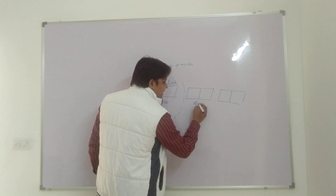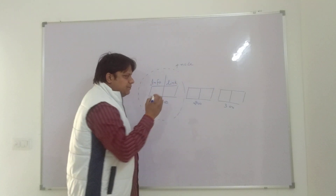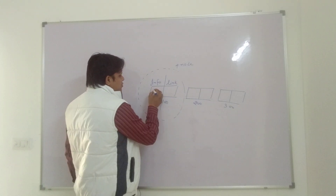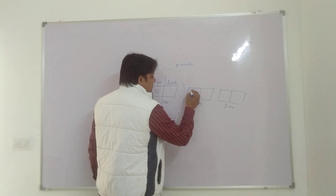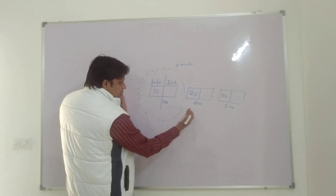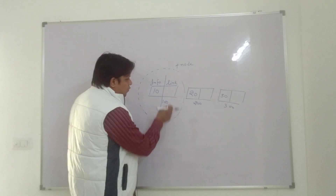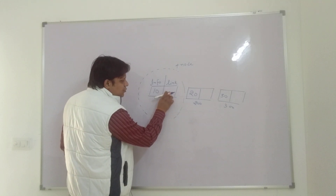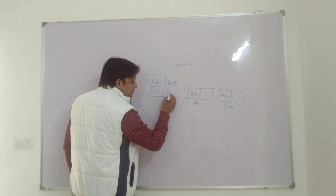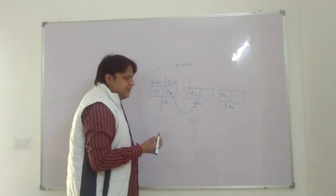Let's say the address of the first node is 100, the second is 200, and the third is 300. Now we will link these nodes. The link part should contain the address of the next node — so node at 100 holds 200 in its link part, making a handshake. It's a simple linkage.